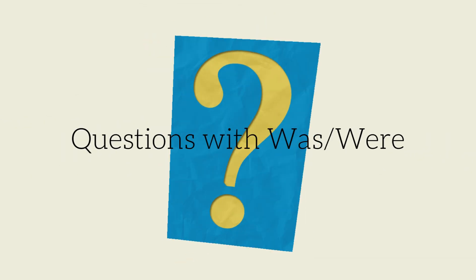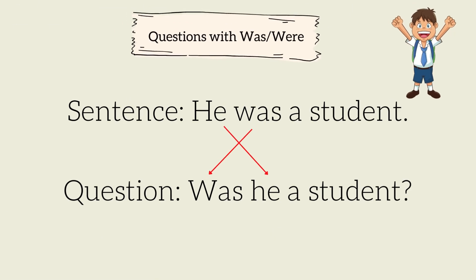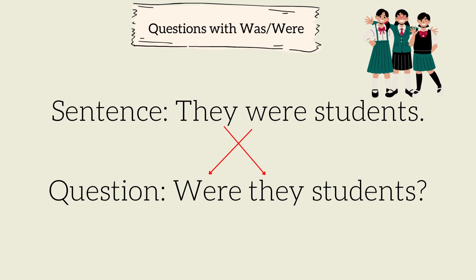Let's practice how to make questions with 'was' and 'were.' In a sentence, we say, 'He was a student.' To make a question, we say, 'Was he a student?' We change the place of 'he' and 'was' to make a question. Another example: 'They were students.' To make a question: 'Were they students?'